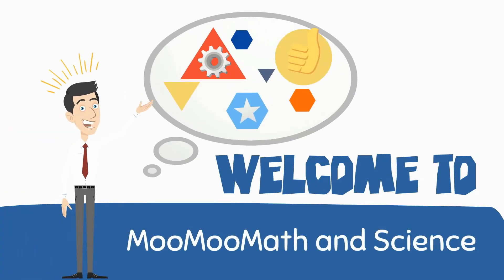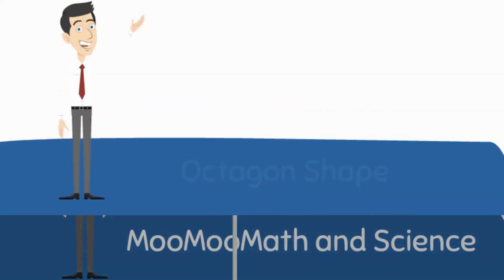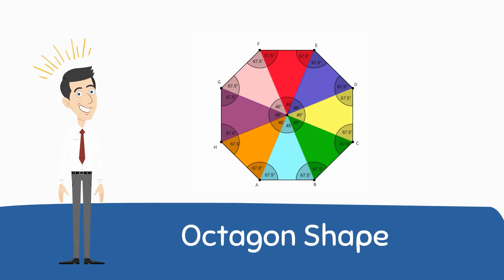Welcome to Moo Moo Math and Science. In this video I would like to talk about the Octagon Shape. An octagon is an 8 sided polygon.